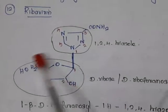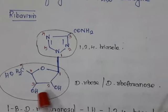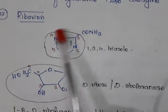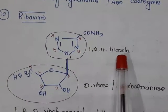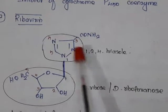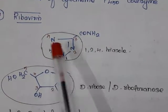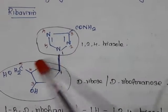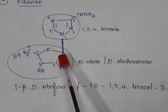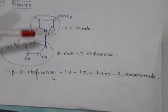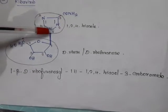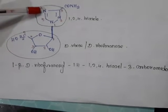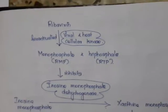The next drug is ribavirin, which has two rings. One ring is D-ribose or D-ribofuranose, and the other is triazole — a five-membered heterocyclic ring with three nitrogens at positions 1, 2, and 4, making it 1,2,4-triazole. These two are linked by a beta linkage, giving 1-beta-D-ribofuranosyl-1H-1,2,4-triazole-3-carboxamide.